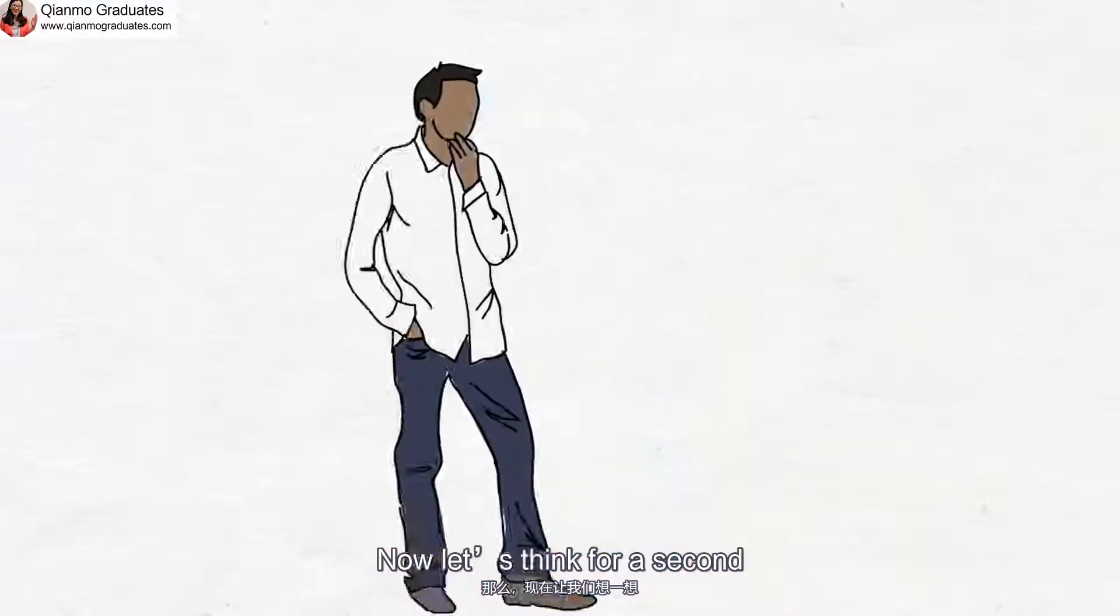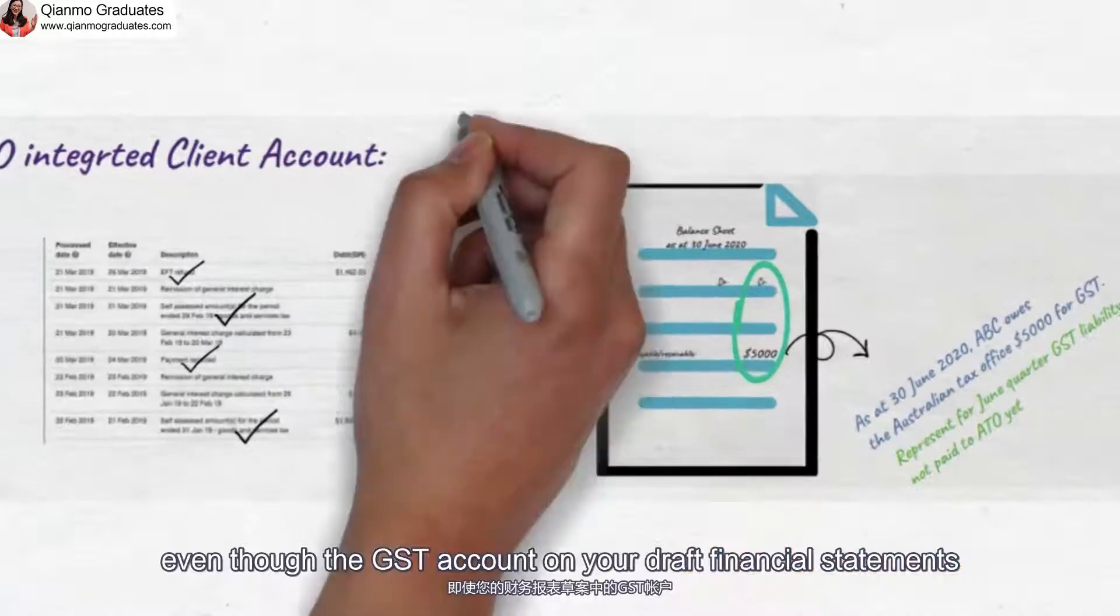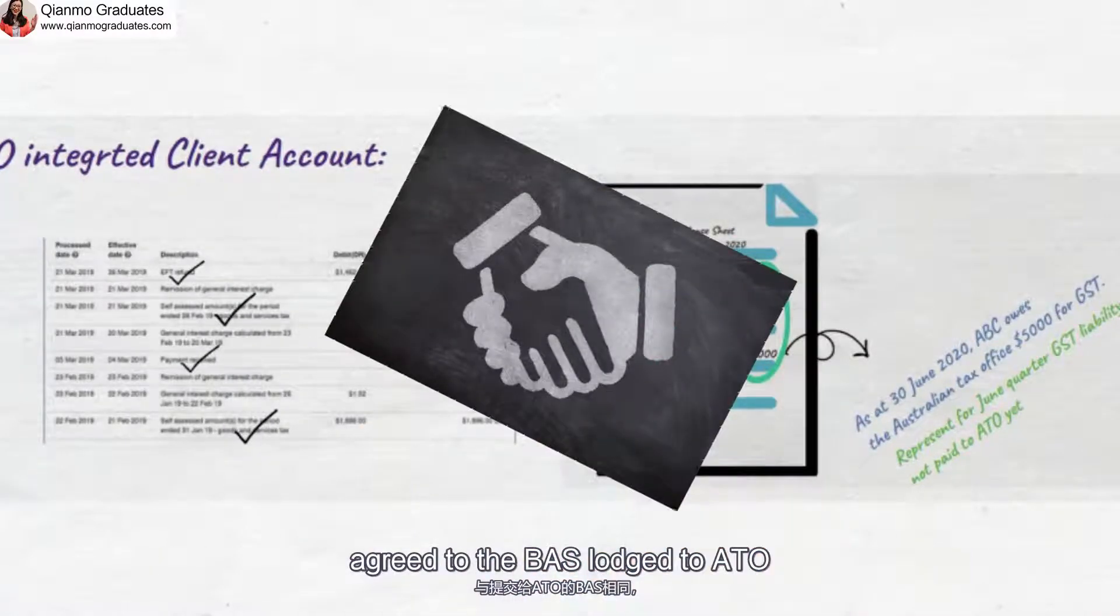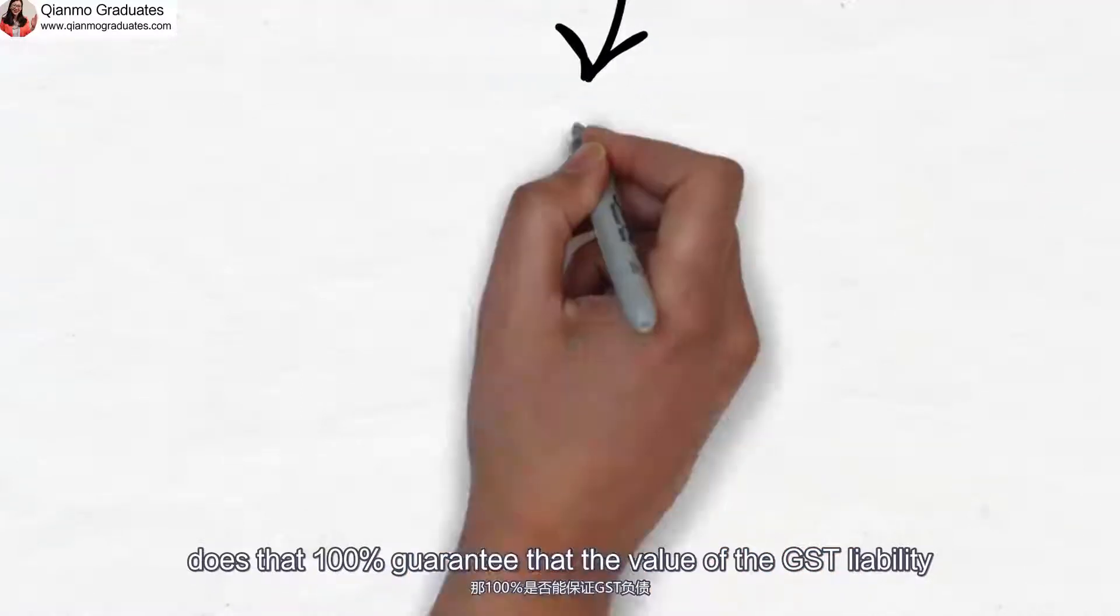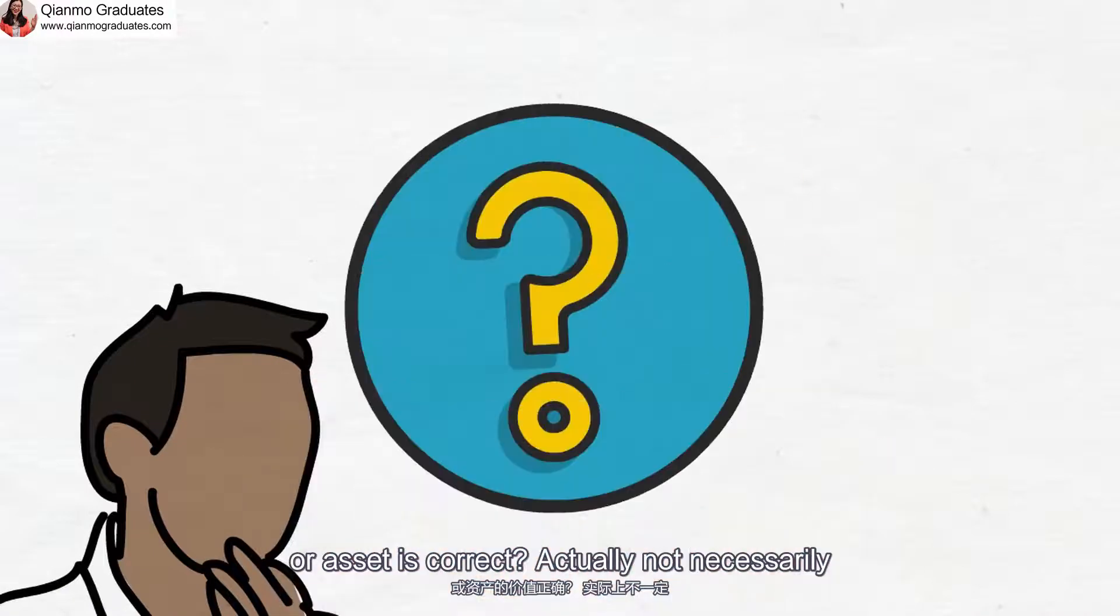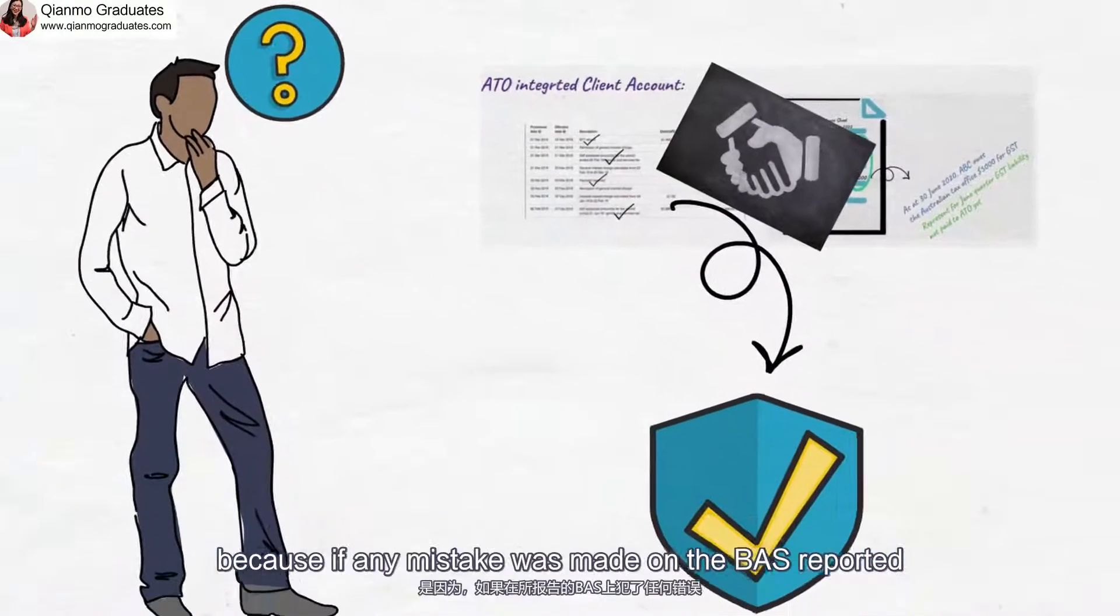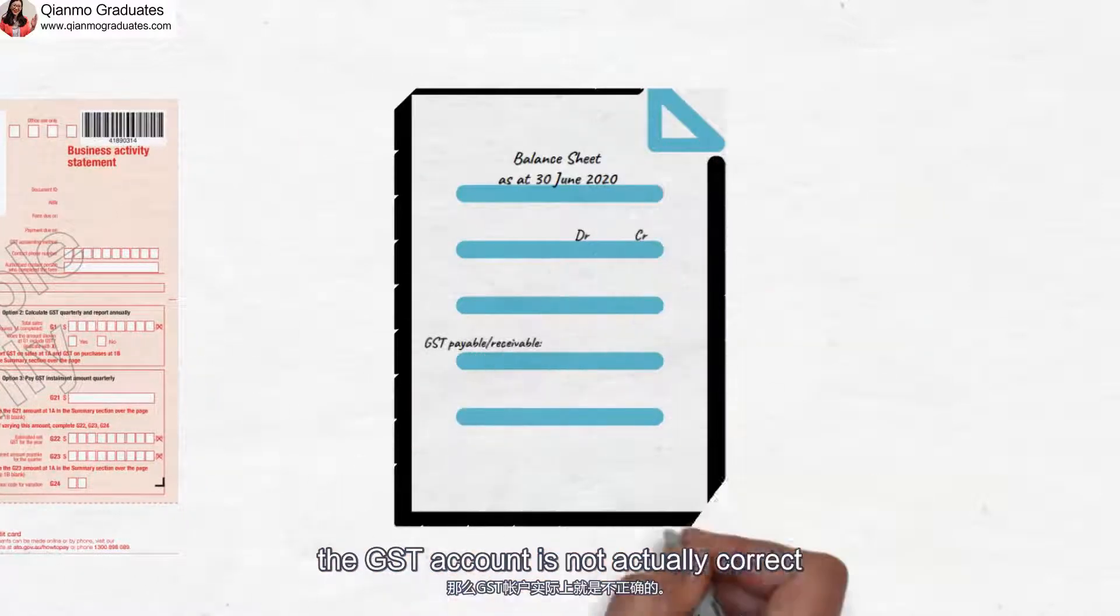Now, let's think for a second. Even though the GST account on your draft financial statements agreed to the BATS lodge to ATO, does that 100% guarantee that the value of the GST liability or asset is correct? Actually, not necessarily, because if any mistake was made on the BATS reported, the GST account is not actually correct.